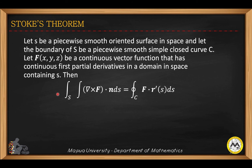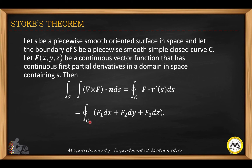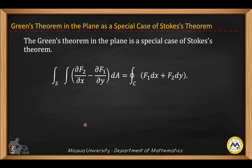Then this equation holds: the double integral is converted to a line integral, which is equivalent to this total integral with respect to curve C. Green's theorem in the plane is a special case of Stokes theorem.